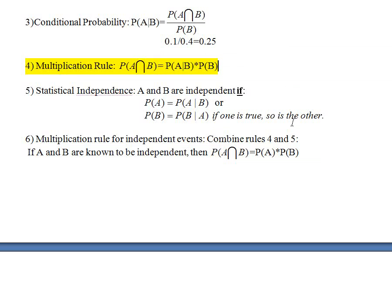But if A and B are independent, if I want to calculate an intersection, I can take the probability of B and — since I know what the probability of A given B is, it's the same as the probability of A — I make that substitution. Wherever you see the probability of A given B, you substitute the probability of A. So if A and B are known to be independent, an intersection can be calculated this way.